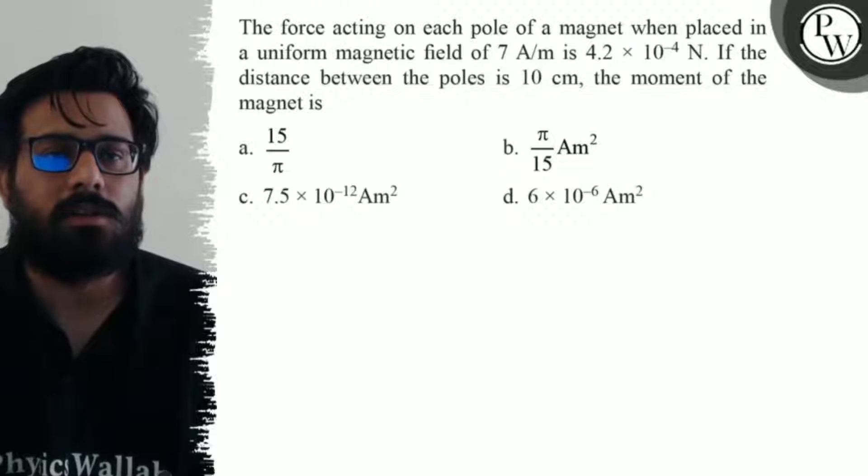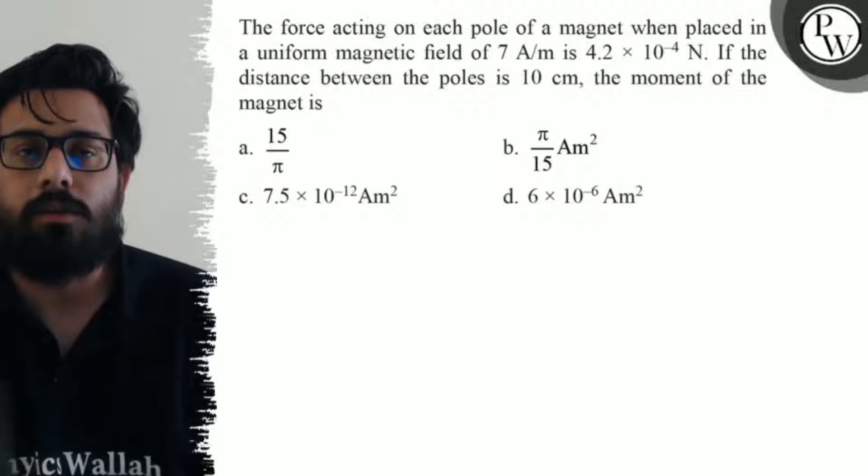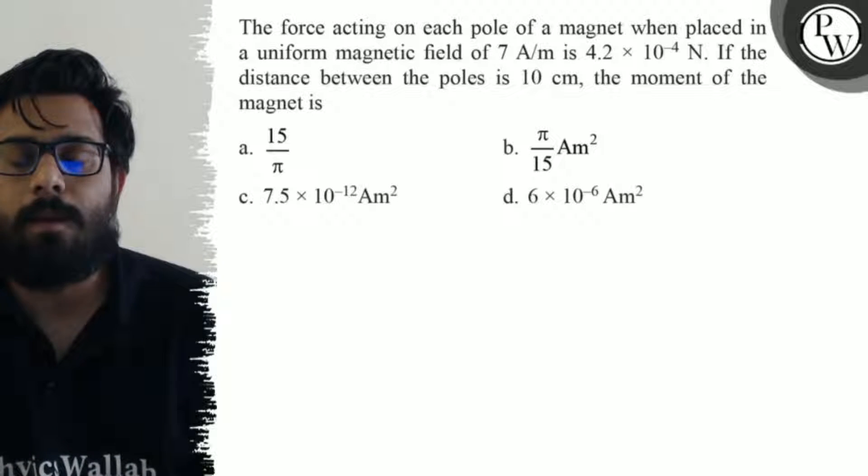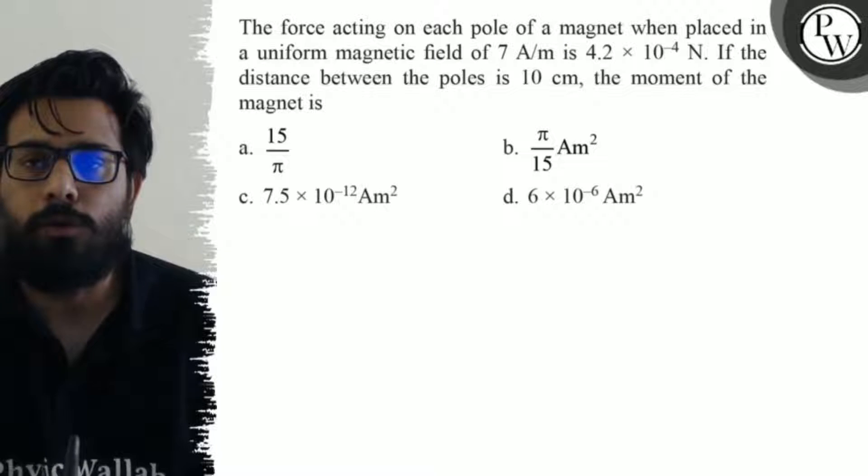Hello, so let's see the question. The force acting on each pole of a magnet when placed in a uniform magnetic field of 7 ampere per meter is 4.2 into 10 to the power minus 4 Newton. If the distance between the poles is 10 centimeter,